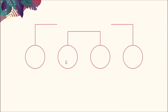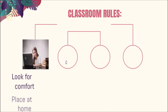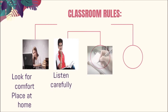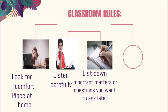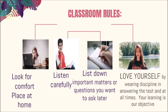Before we go on discussing the entire lesson, be reminded with our agreed 4L classroom rules: One, look for a comfortable place at home; Two, listen carefully; Three, list down important matters or questions you want to ask later; and Four, love yourself by wearing discipline in answering the test. At all times, your learning is our objective.